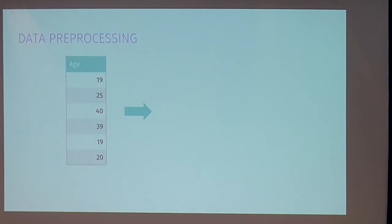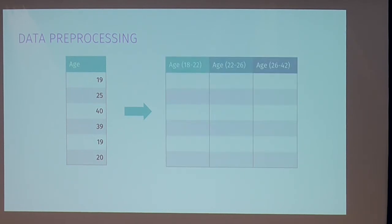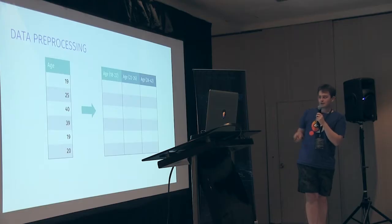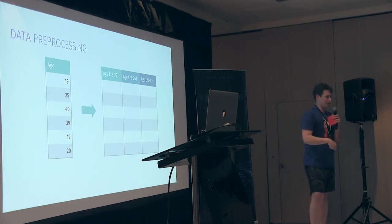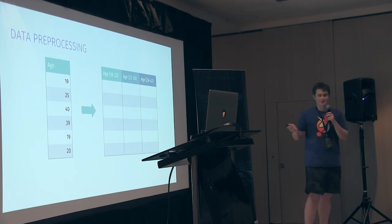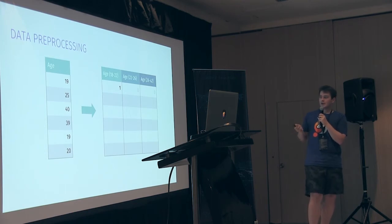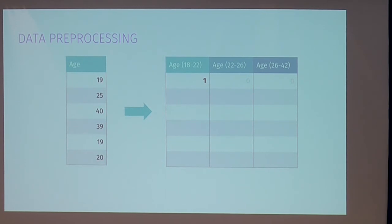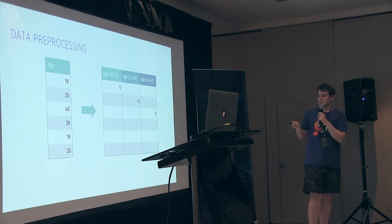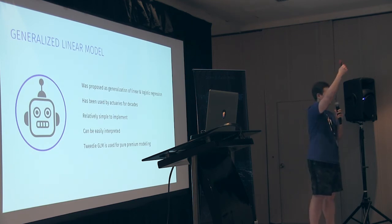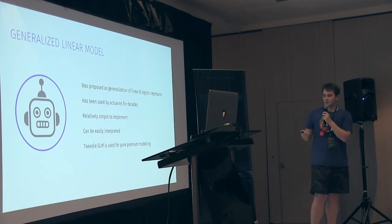Before feeding data to the machine learning algorithm, we need to do some pre-processing. On the left we have the age variable with various numbers like 19 or 25 years old. We define new features like: is your age between 18 and 22, is your age between 22 and 26, and so on — a series of yes-and-no questions. When you go to an insurance company to file a policy, they give you a questionnaire with those features. Only one feature will be active at a time since you can't simultaneously be 19 and 22. That's how we get data for the generalized linear model.